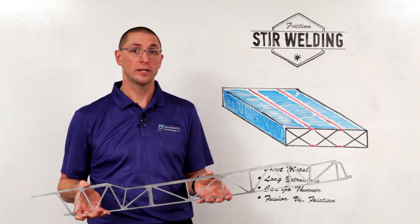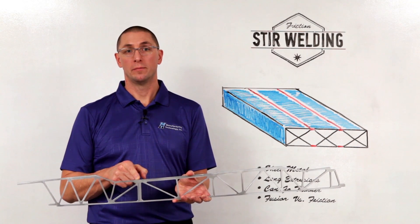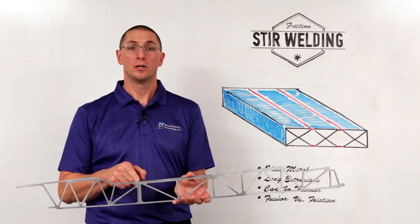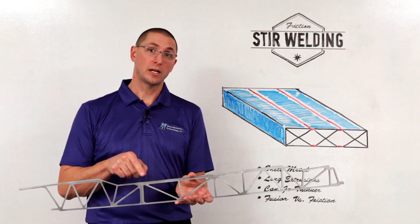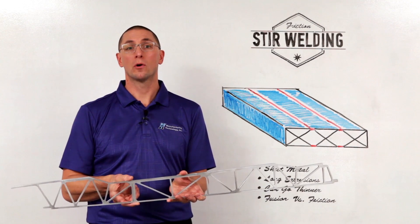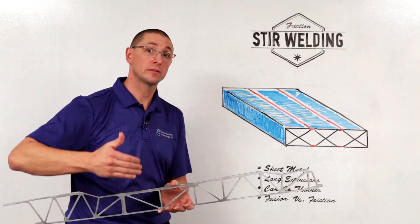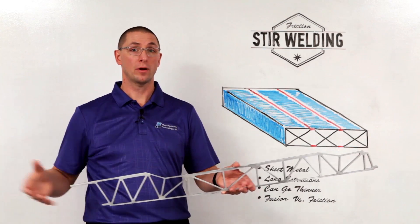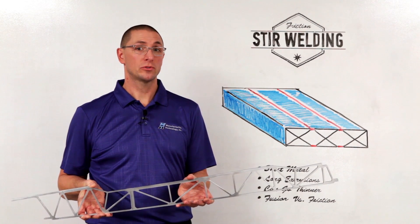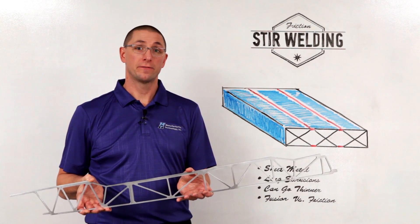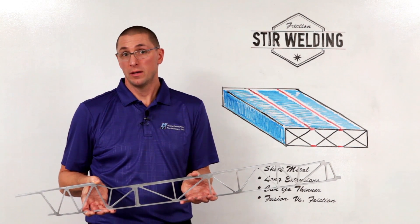So why would you use friction stir welding instead of fusion welding? With a fusion weld, you get melting, and melting means re-solidification which weakens the parent material. To achieve the same joint strength as a solid state bond, a fusion weld would require more material at the welding section, which adds mass. On a really long or wide part, that extra mass really adds up. You can get the same strength of joint from a friction stir weld using less material — this is cost savings for the same performance.